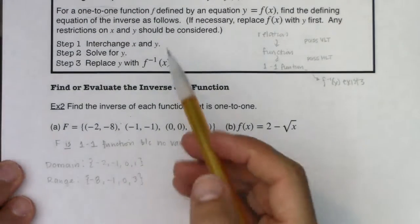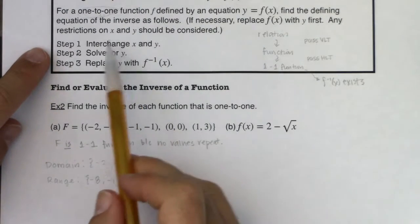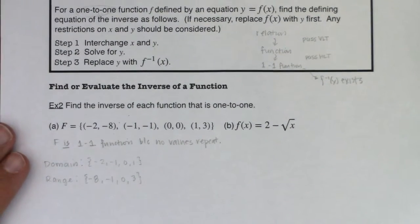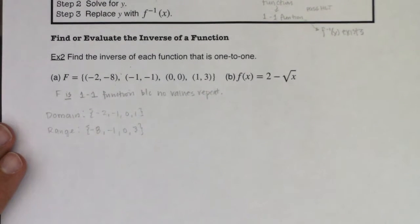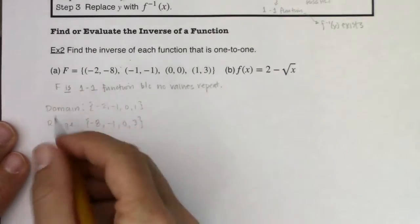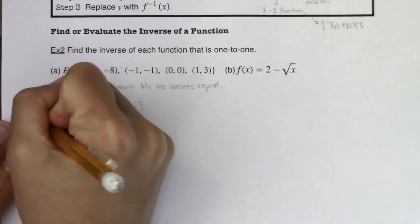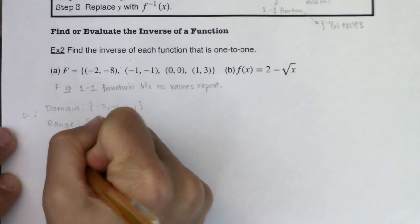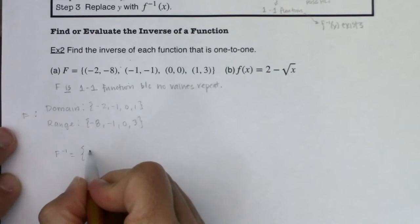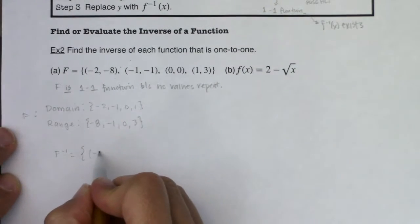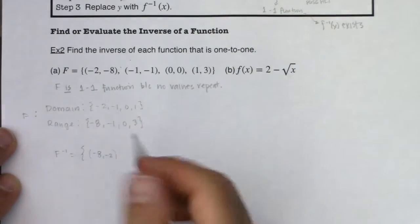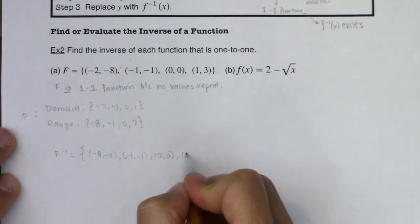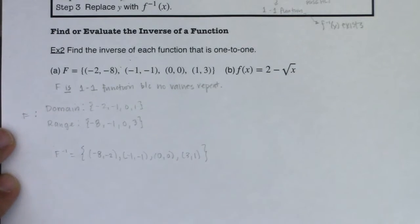Now I want to talk about f inverse. With f inverse, if I have ordered pairs, step one says just go ahead and interchange x and y. So let me interchange x and y. Here was f — this is the domain for function f. Now let's take a look at f inverse. F inverse is going to be some ordered pairs, but I'm going to flip-flop the order. So instead of negative two, negative eight, we're going to say negative eight, negative two. Now negative one, one reflects on itself, and so does zero, zero. This ordered pair will turn into three, one. And that's it — that's all there is to f inverse.